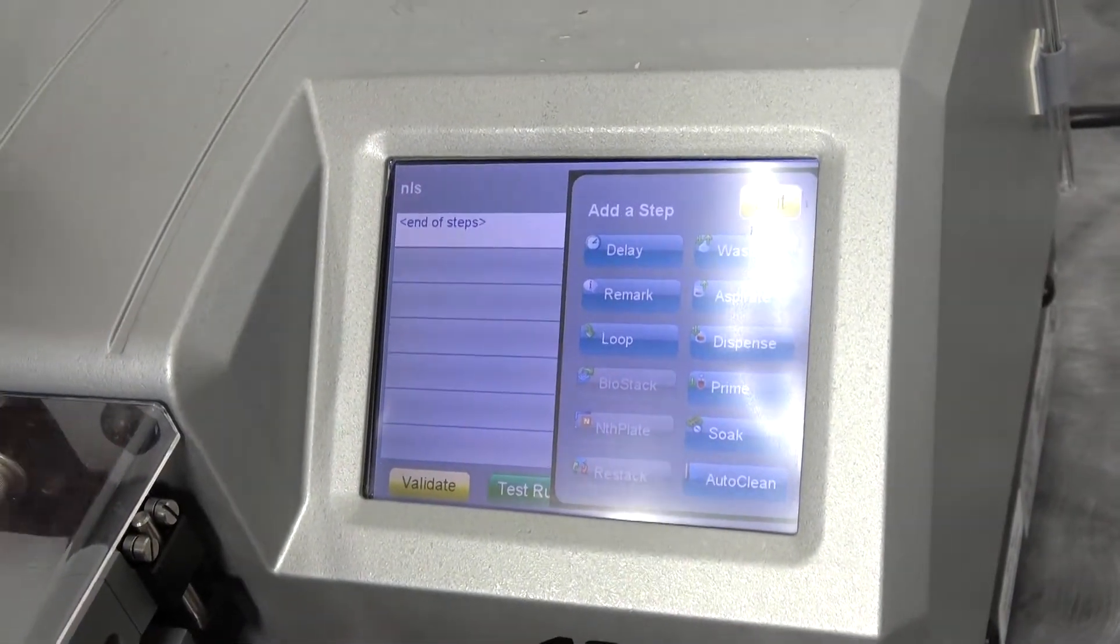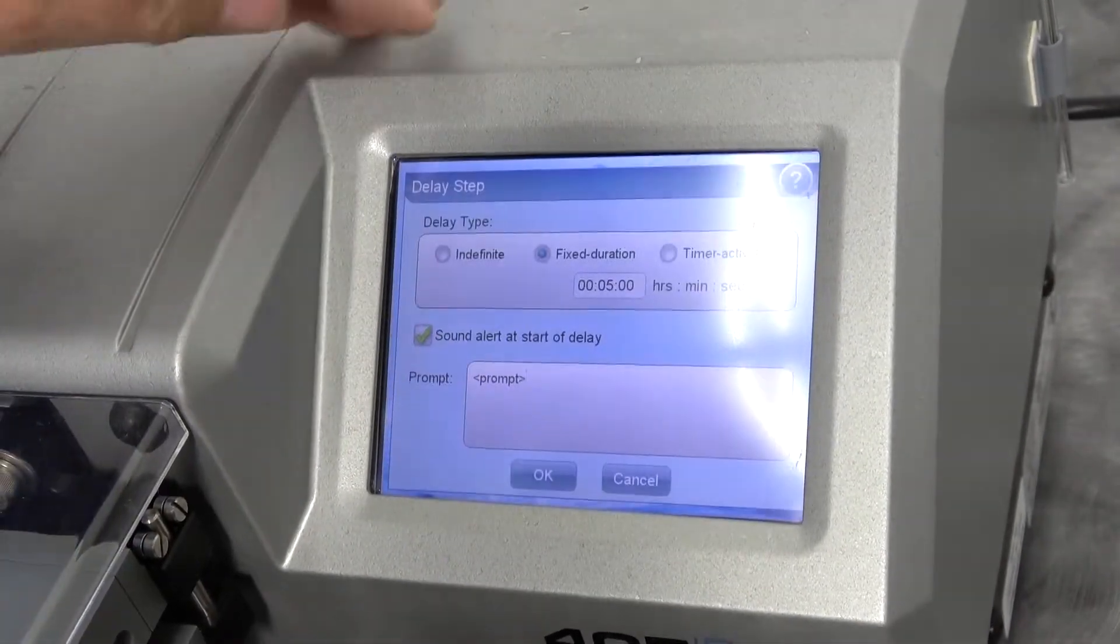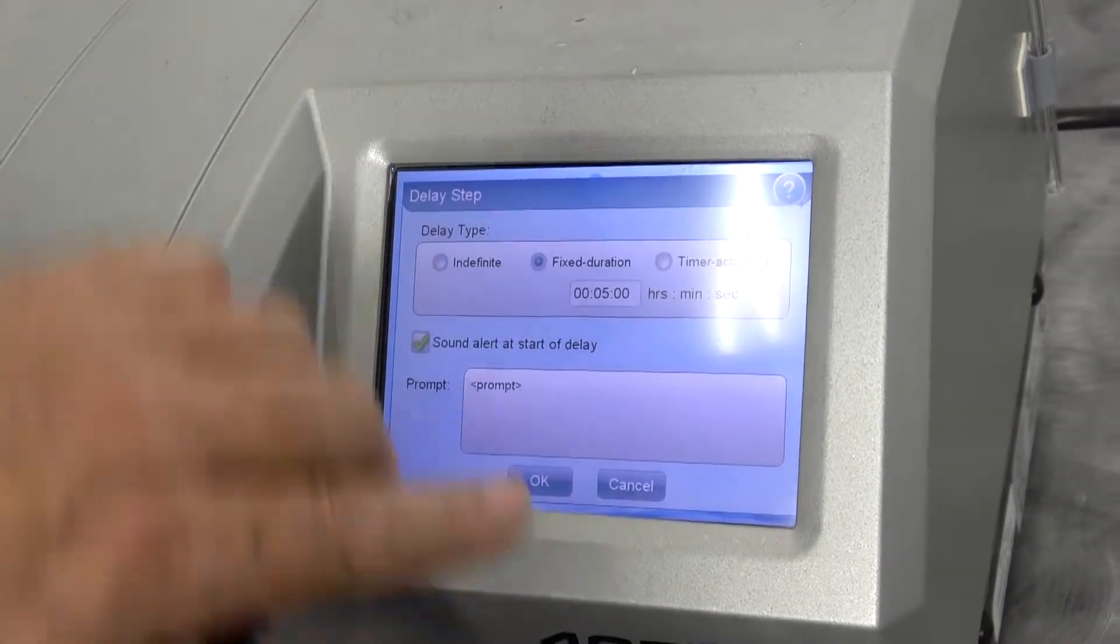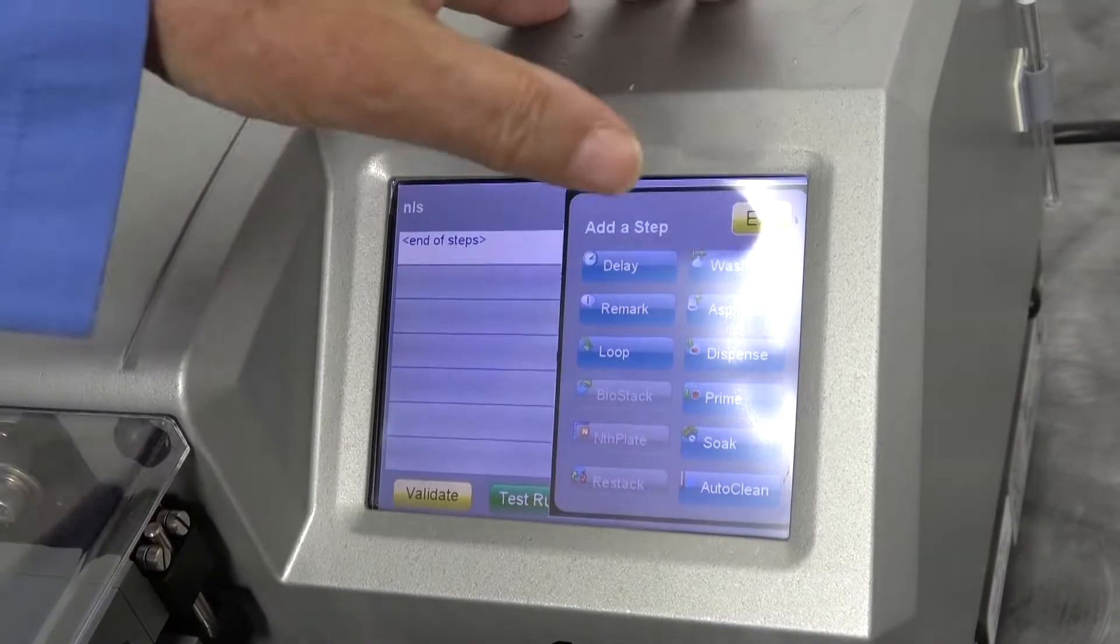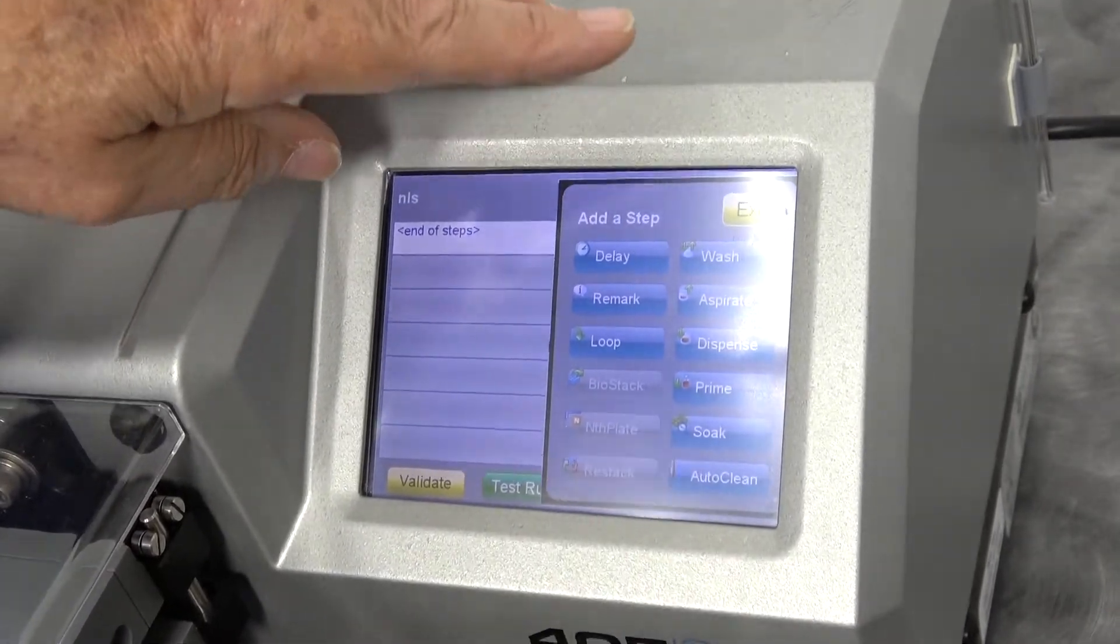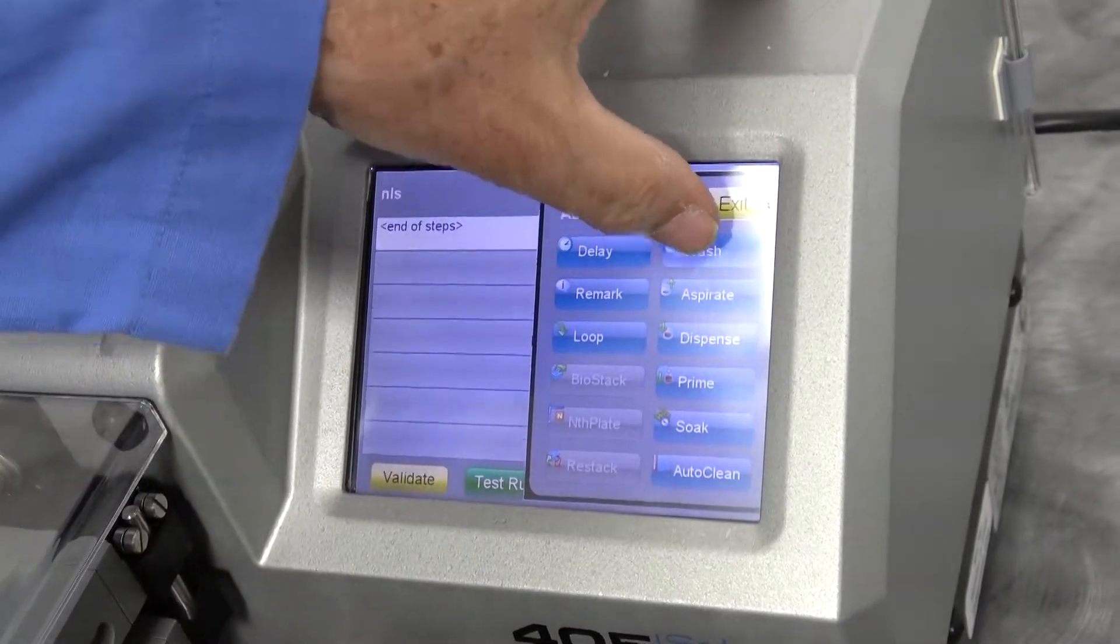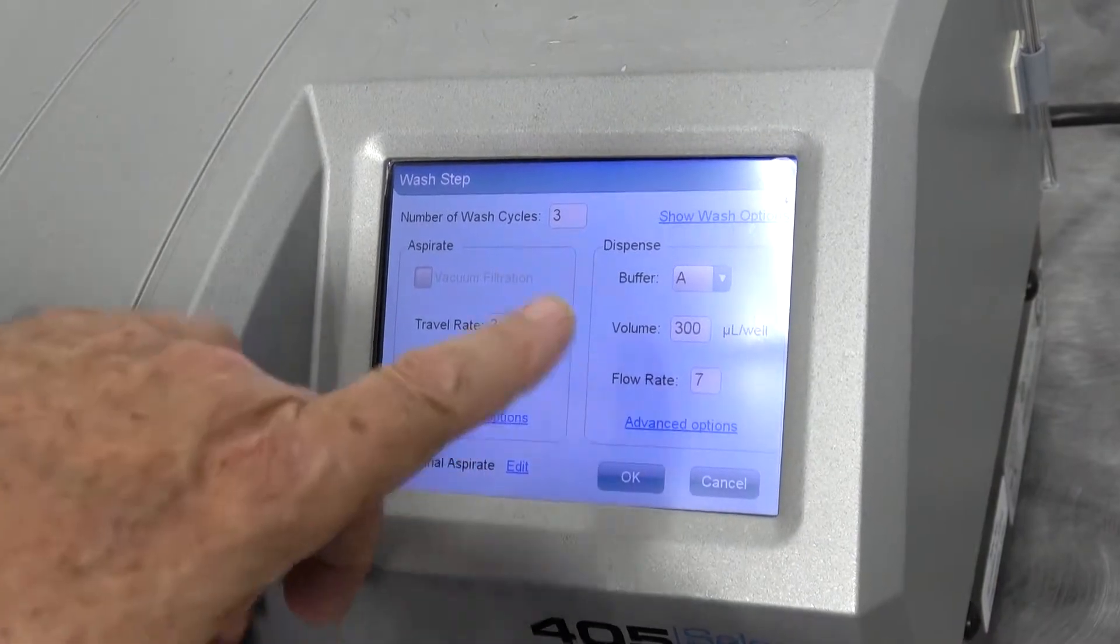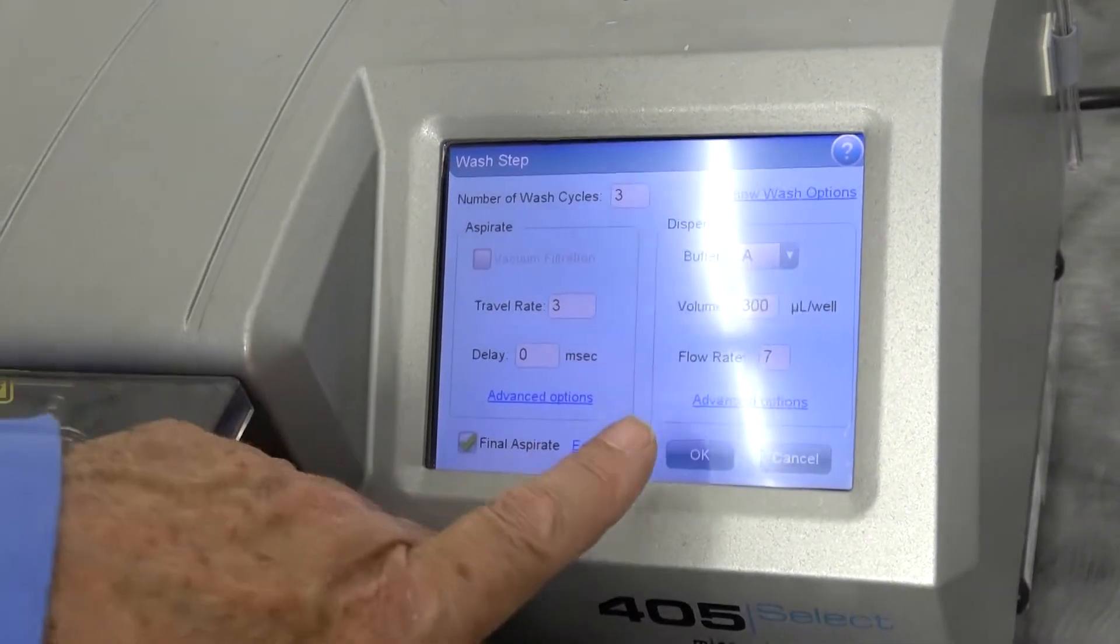We can put a delay, so you can give instructions of what somebody should be doing—a prompt, in other words. Add remarks. You can have it go through a loop. Of course, wash, aspirate, dispense, prime, soak, and auto clean, which is for your sonification, and it is so easy to program. You press wash. You tell it how many cycles you want to aspirate at the beginning.